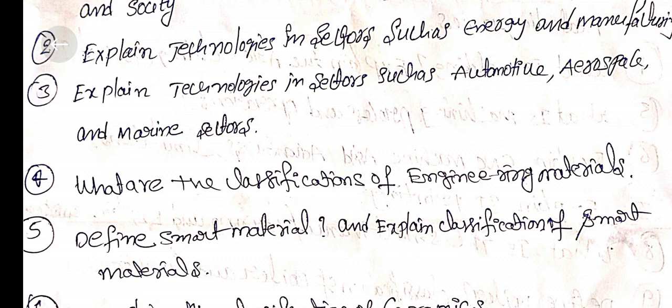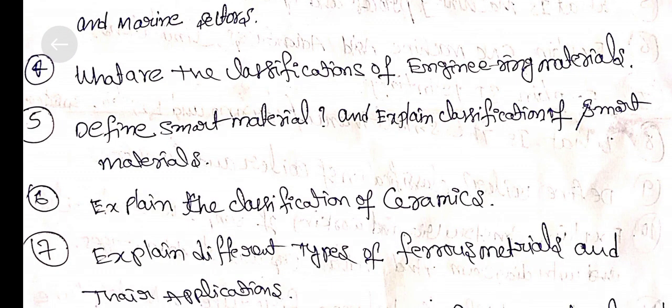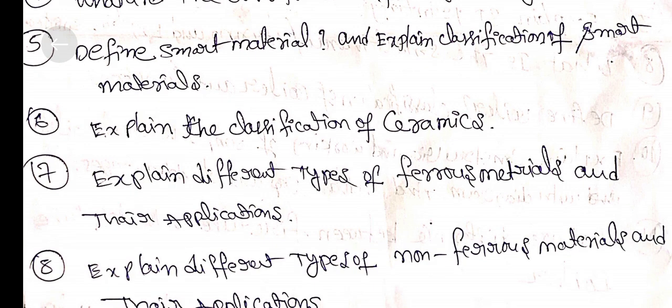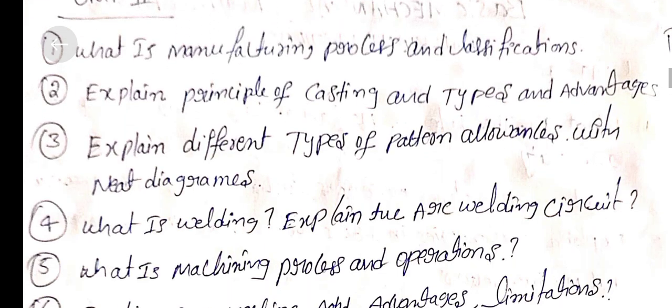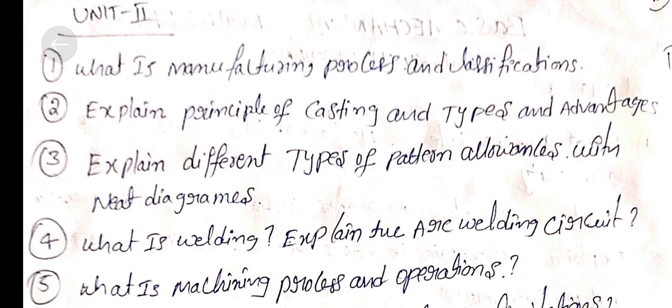Question 4: Classification of engineering materials. Question 5: Define smart materials and explain classification of smart materials. Question 6: Explain the classification of ceramics. Question 7: Explain different types of ferrous materials and their applications. Question 8: Explain different types of non-ferrous materials and their applications.